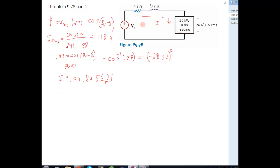So now we can find the voltage across these resistors. We do that by saying voltage across the resistor is 0.1 plus 0.2J times this current.